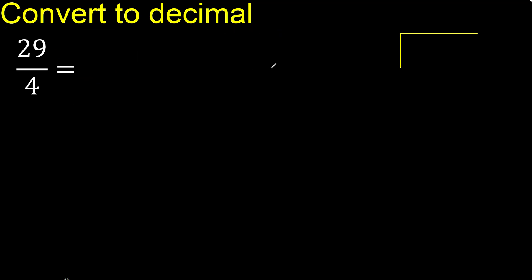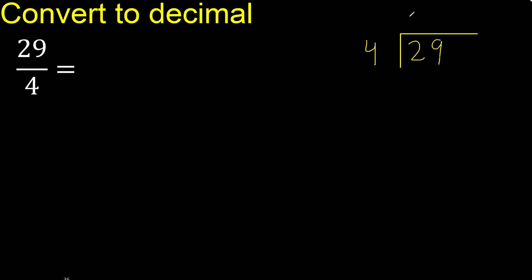29 divided by 4. 2 is less, therefore next digit. 29 is not less, therefore with 29: 4 multiplied by which number is nearest to 29 but not greater? 4 multiplied by 8 is 32, which is greater. 4 multiplied by 7 is 28, which is not greater. 29 minus 28 is 1.